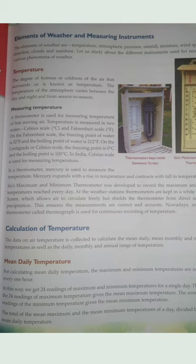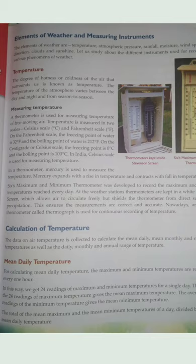A thermometer is used for measuring the temperature of free-moving air. Temperature is measured in two scales: Celsius scale (degree C) and Fahrenheit scale (degree F). On Fahrenheit scale the freezing point of water is 32°F and the boiling point is 212°F. On Celsius scale the freezing point is 0°C and the boiling point is 100°C. In India, the Celsius scale is used. In a thermometer, mercury is used — it expands with a rise in temperature and contracts with a fall in temperature.